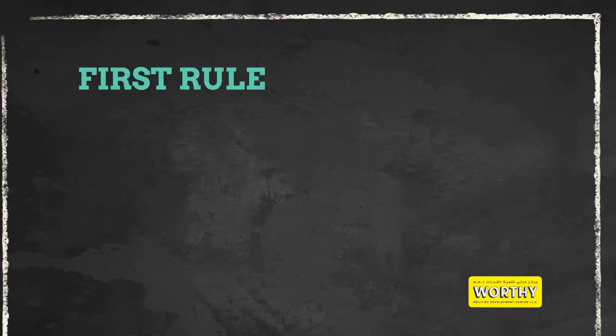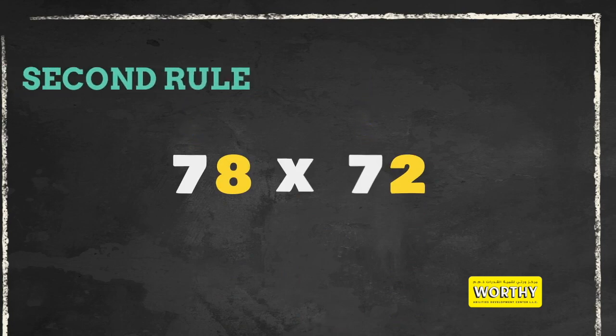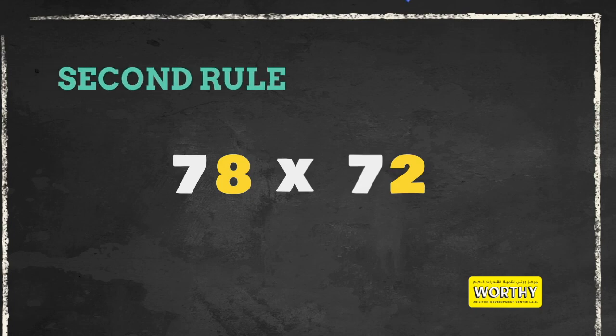First rule, the 10's value should be the same. In this case, the number is both 7. Second rule, the 1's value should equal into 10. In this case, 8 plus 2 is equals to 10.